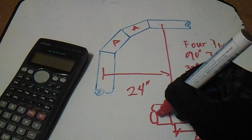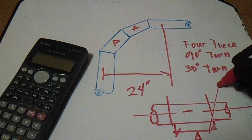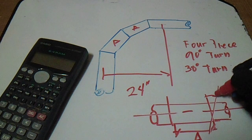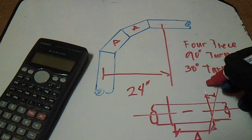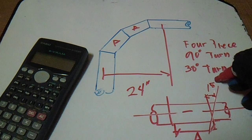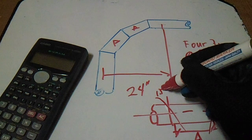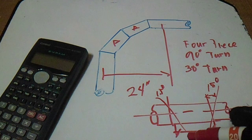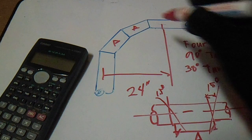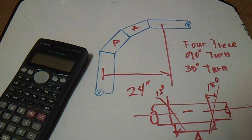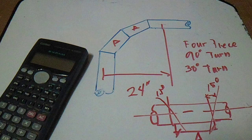This is our center. So this is 15 degrees, and also from the side is 15 degrees. Now, how to compute dimension A? The formula for dimension A is equal to radius multiplied by 0.2679, multiplied by 2.